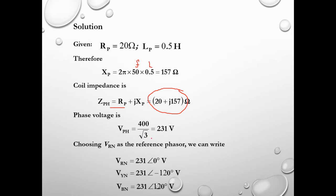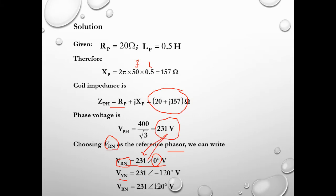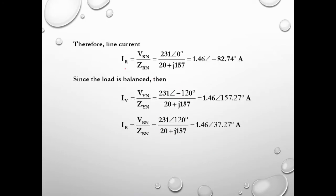Phase voltage equals 400 divided by root 3. Using V_RN as the reference phase, we write V_RN equals 231 angle 0° volt. V_YN equals 231 angle −120° volt, and V_BN equals 231 angle +120° volt. Therefore by Ohm's law, I_R equals V_RN over Z_RN, which gives us 1.46 angle −82.74° ampere.